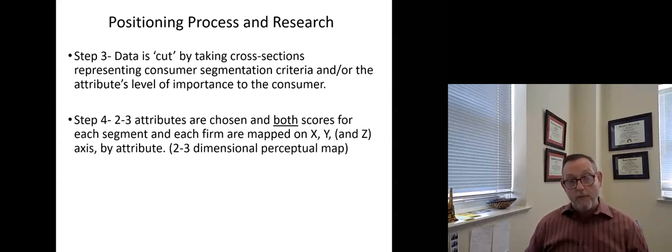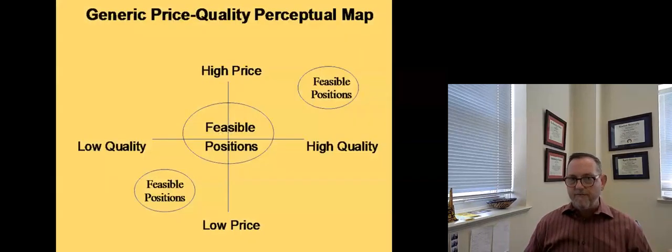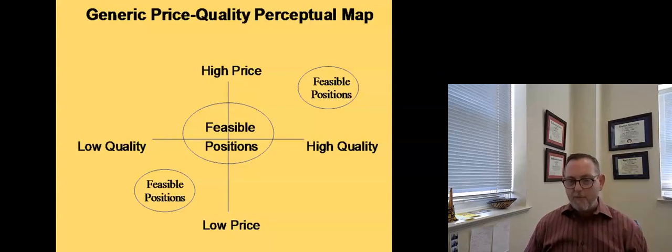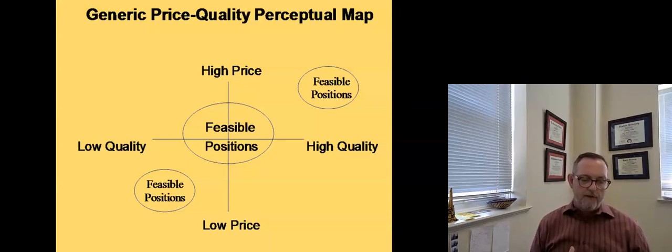And this is a traditional way we do this. So just to kind of think about the way perceptual maps might look, oftentimes this is called a generic price quality map. A lot of times price and quality relate to each other. And they're usually positively related in the sense that when quality goes up, price goes up and so forth. So if you kind of think about where products lie in the minds of consumers, they're probably going to be in some of these diagonal spaces from the lower left to the upper right. Now, again, this is kind of the initial look or the initial feel for what this might be.